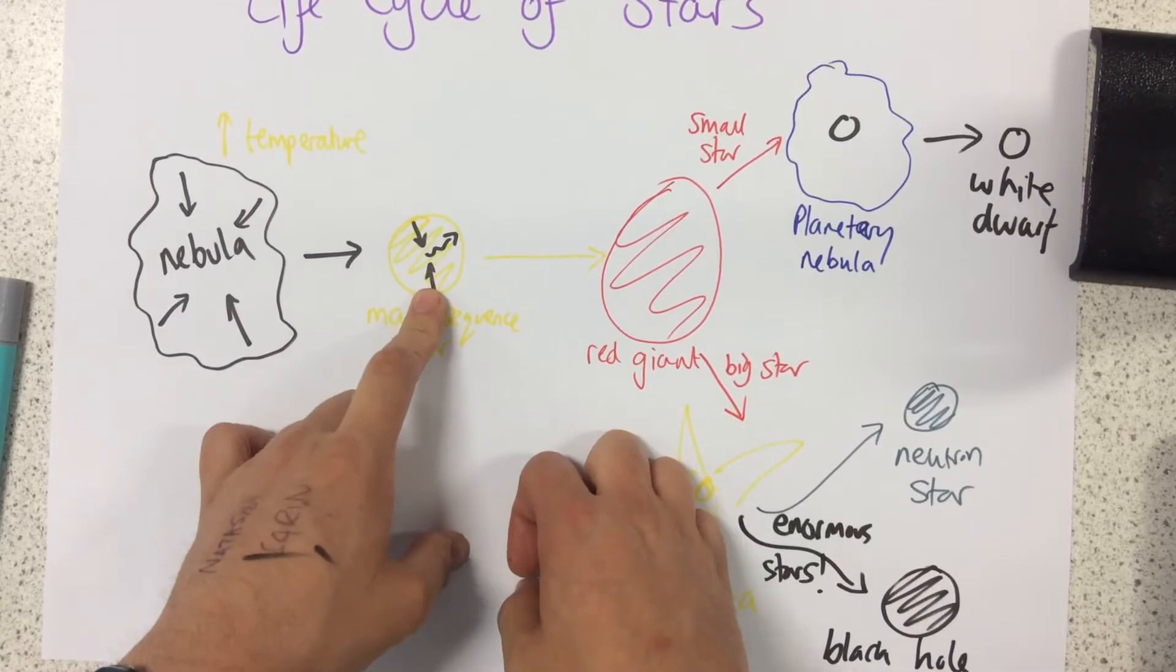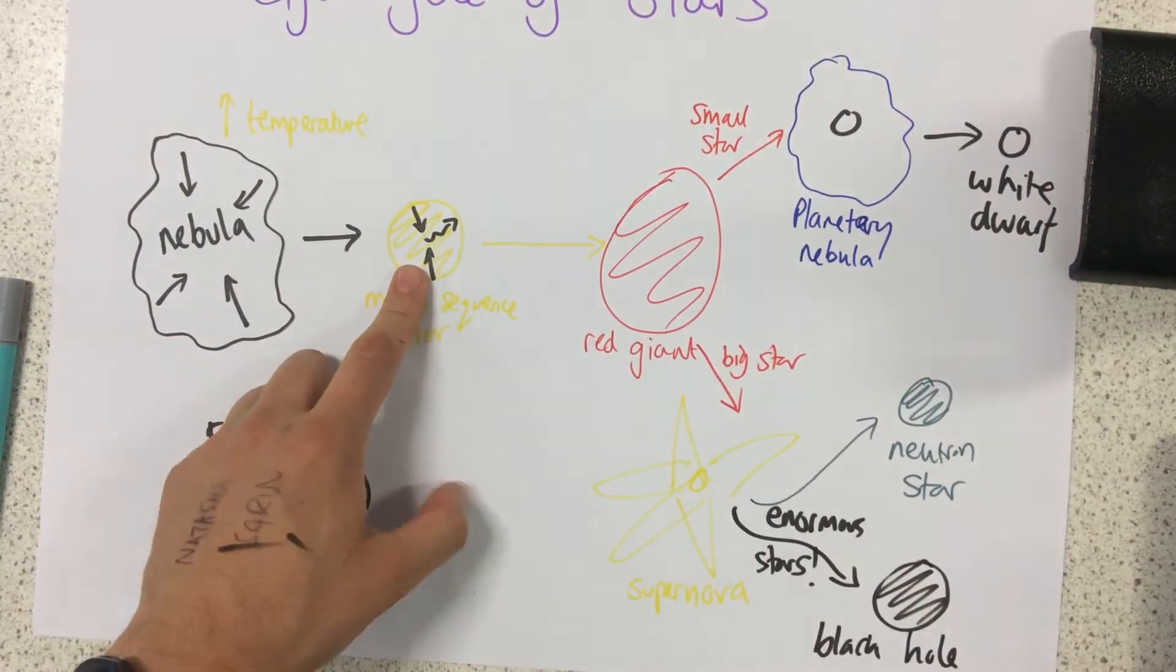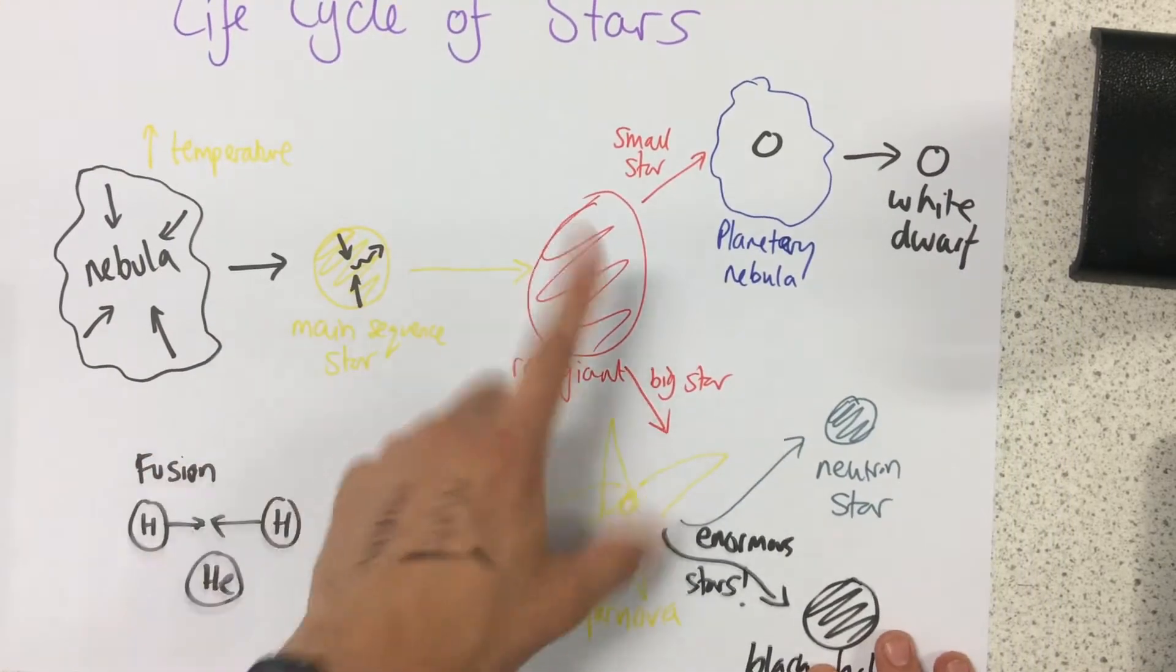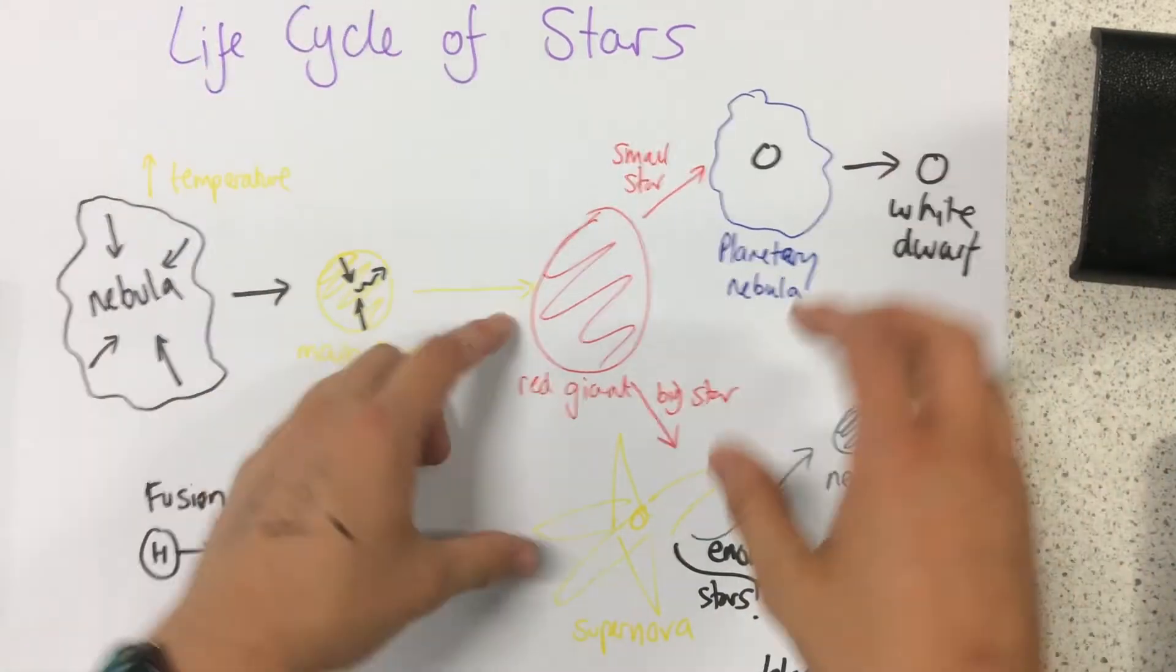This sequence star is stable because gravity is acting inwards but heat from fusion is acting outwards. So it can stay like this for billions of years. When the hydrogen runs out, it becomes a red giant and swells up like this.